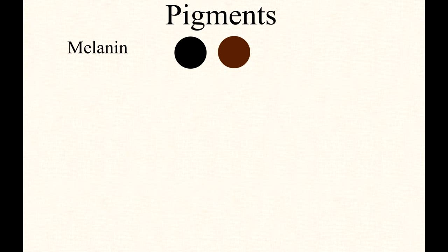In addition, butterflies have pigments. The most common pigment is melanin, which makes butterflies black and brown. Yellow butterflies are stained with carotenoids. Carotenoids give off not only yellow colors but also brown, orange, and red colors.